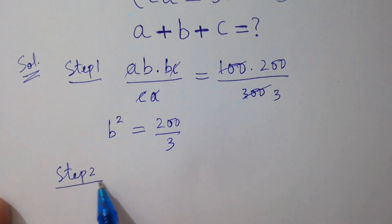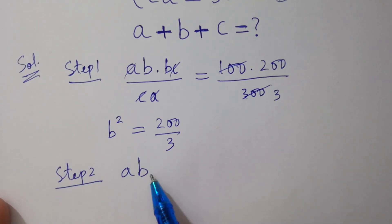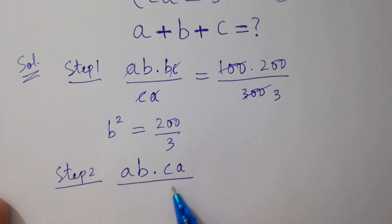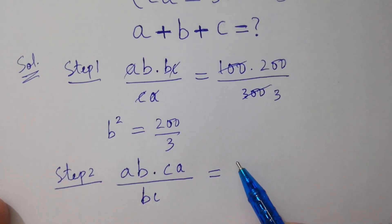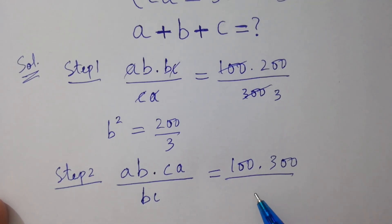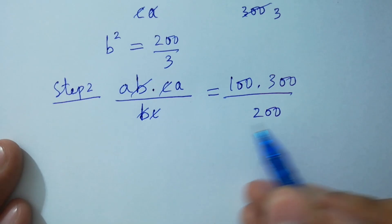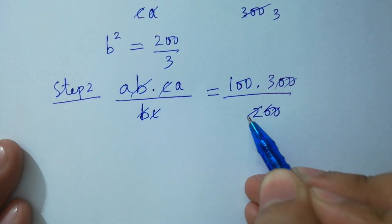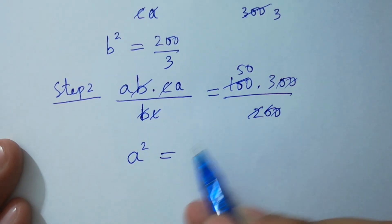Step 2: multiply the first equation by the third equation, then divide by the second equation — that is, (ab × ca) / bc, which equals (100 × 300) / 200. Here, b and b will be cancelled, c and c will be cancelled. We get a squared equals 150.